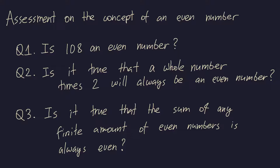But now, the second question will easily become unreliable if the student has already seen such a question before, because for this question the student could prepare as follows: one could just memorize that when a question is of this kind — where instead of 2 we could have any other number whose last digit is 0, 2, 4, 6, or 8 — then the answer is always yes. So once again, it is possible to prepare for correctly answering this question without really understanding what an even number is.